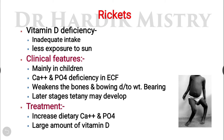When vitamin D deficiency takes place in childhood, the condition is known as rickets. The causes of vitamin D deficiency include inadequate intake in the diet as well as less exposure to sun. People who are living in areas where sun rays are not properly reaching the earth are more prone to vitamin D deficiency.